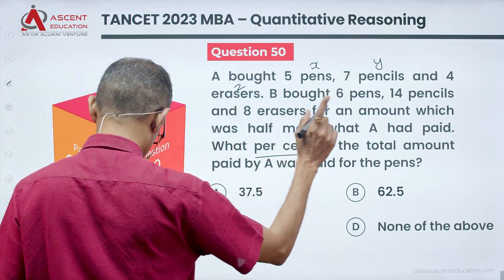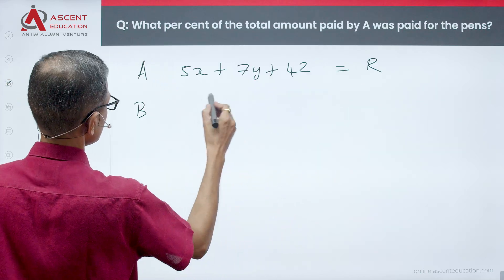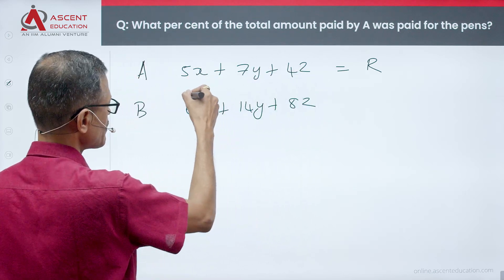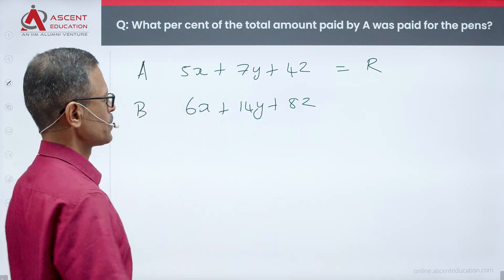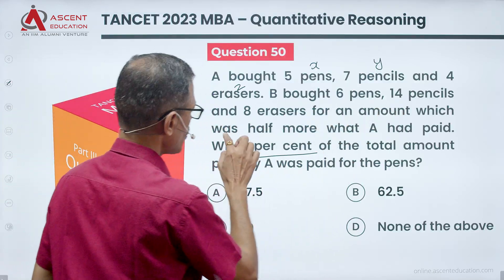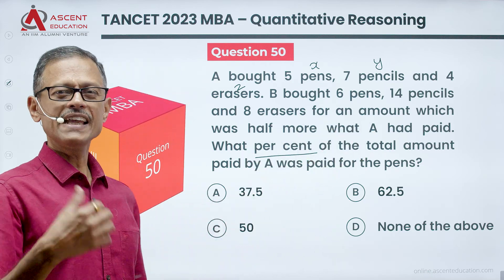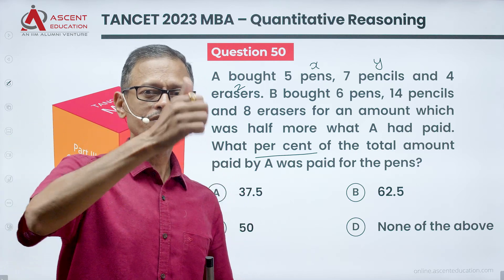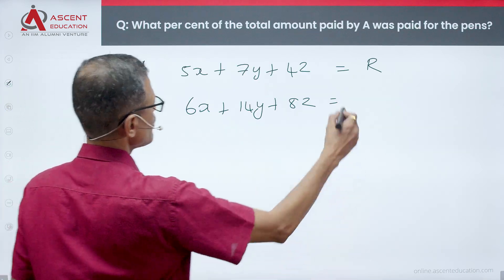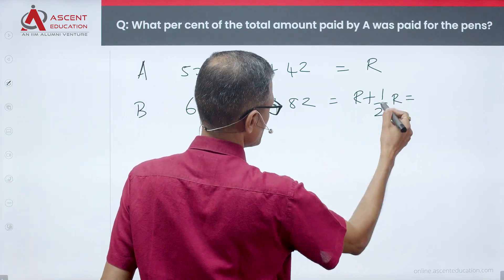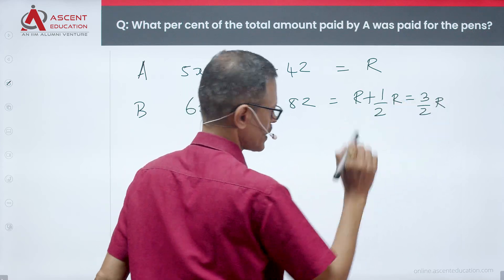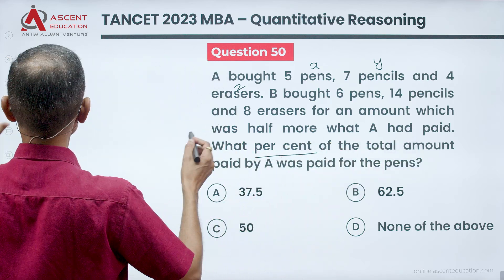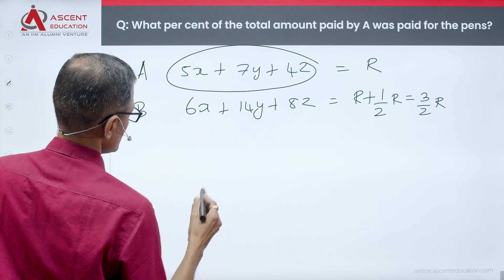B also bought the same 3 things but in different quantities: 6 pens, 14 pencils, and 8 erasers. B paid an amount which was half more than what A paid. So if A paid R, then B paid R plus half of R, which is equal to 1.5R.